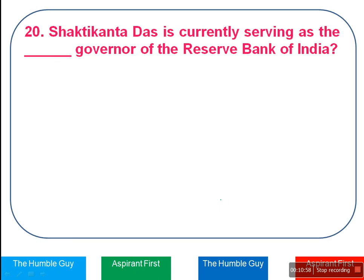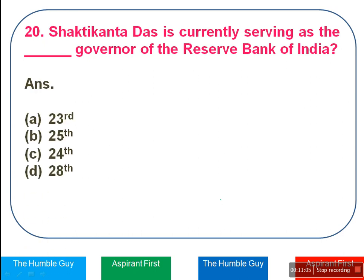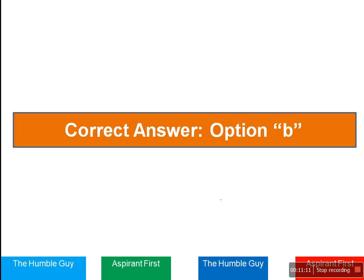Shaktikanta Das is currently serving as the dash Governor of the Reserve Bank of India. The options are 23rd, 25th, 24th, or 28th. The right answer is Option B — 25th.